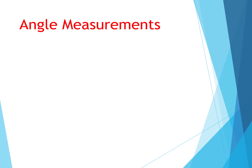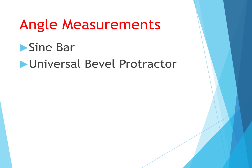Let us define what is an angle. An angle is an opening between two lines which meet at a point. If one line is moved around a point in an arc, a complete circle can be formed. So we are going to measure this angle in what is known as angular measurement.